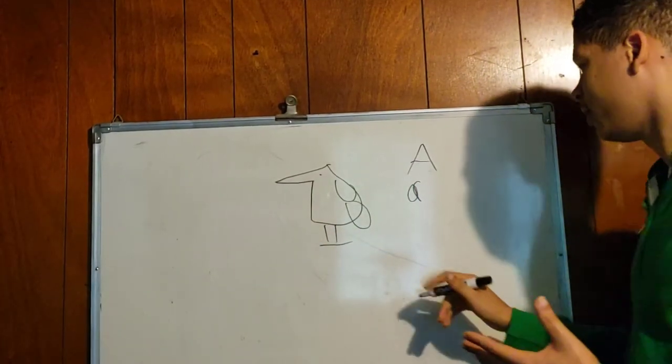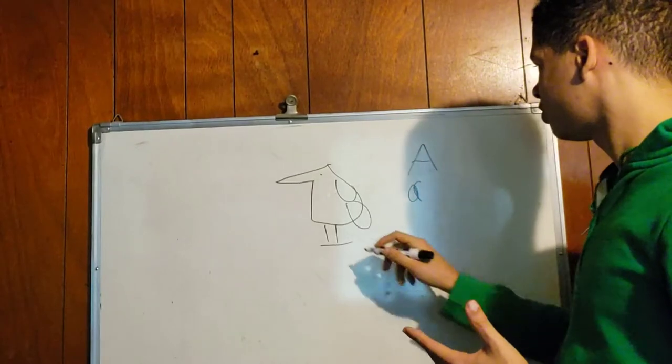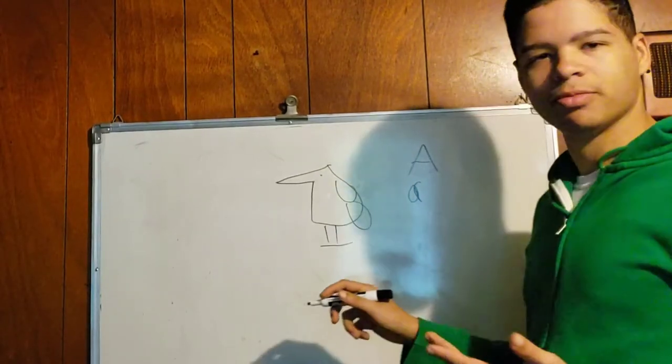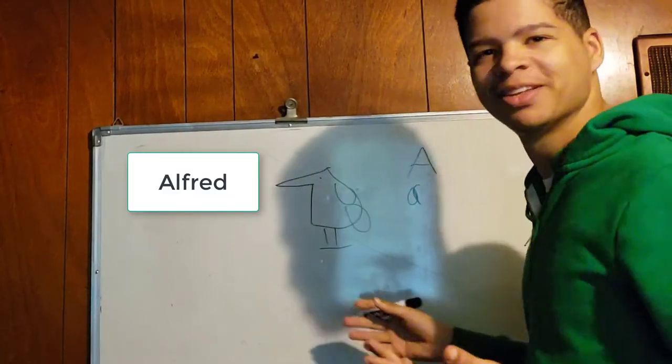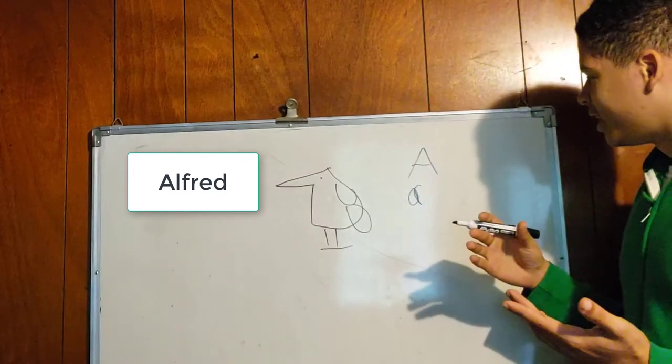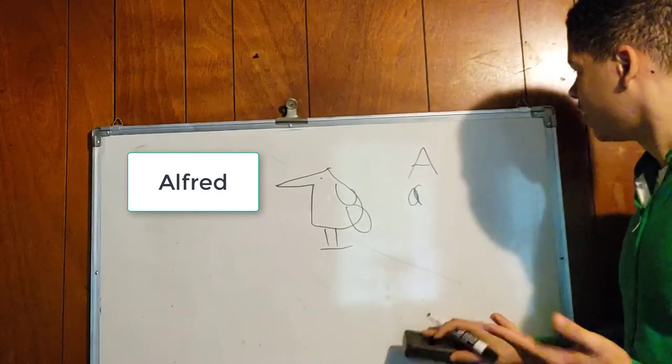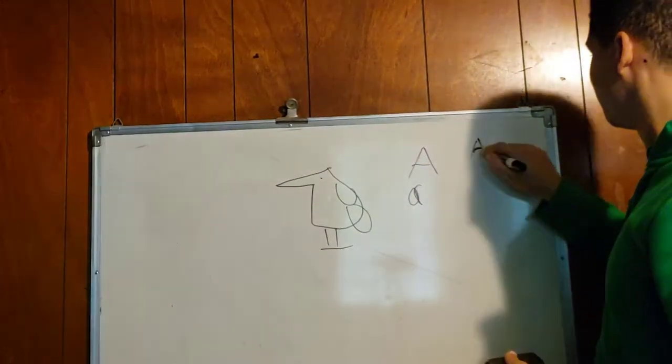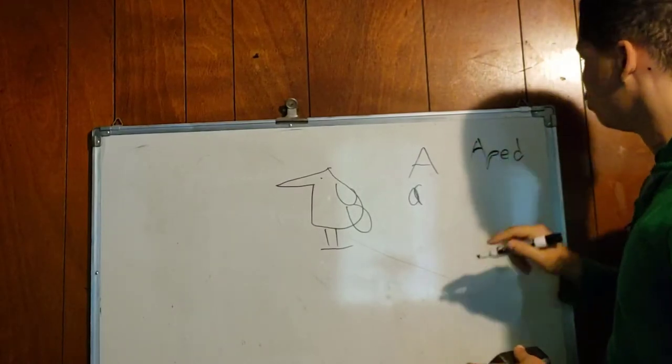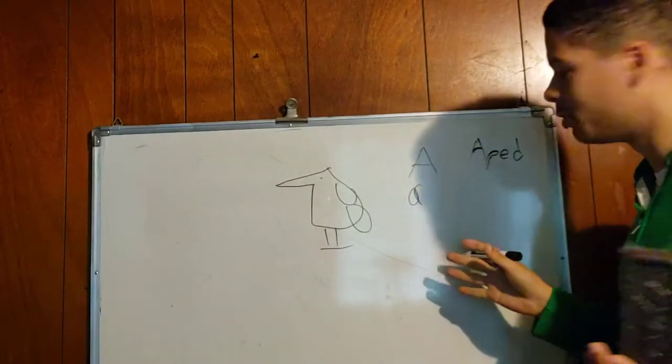And it means alpha. And the bird itself, I guess we'll call him Alfred, is in Egyptian called an aped. An aped. Which just means a general bird.